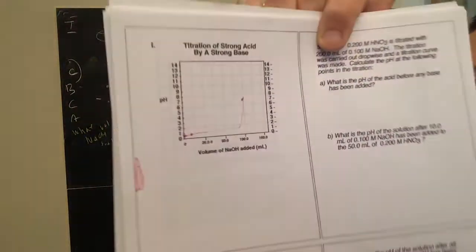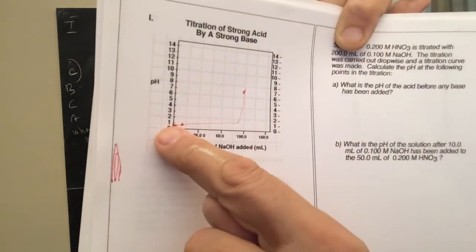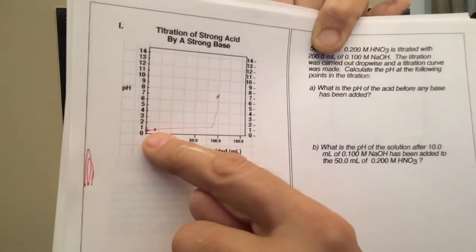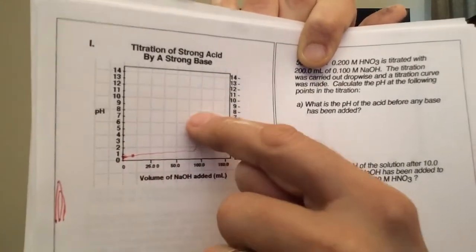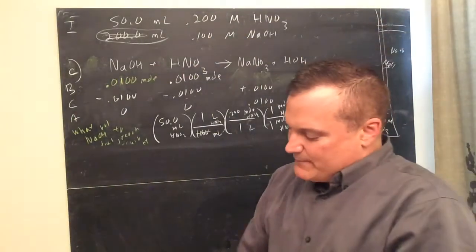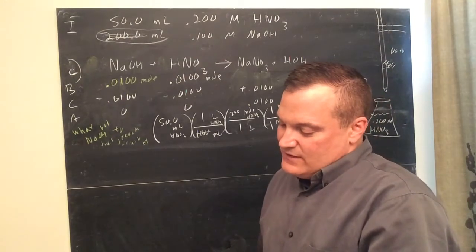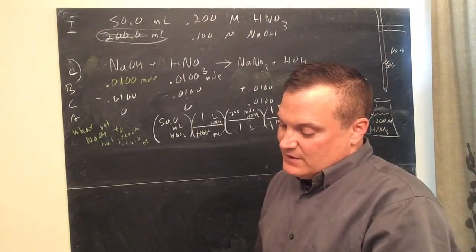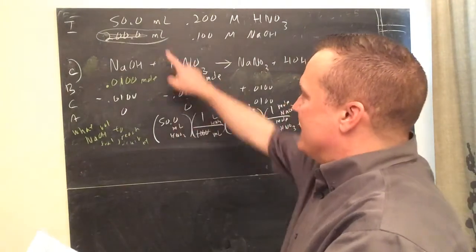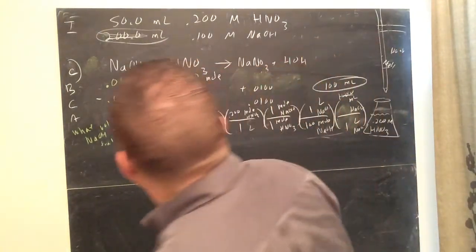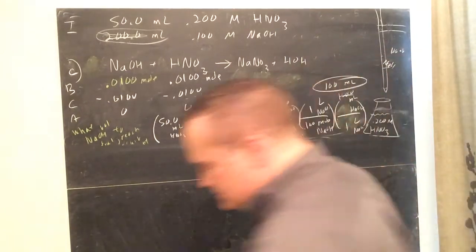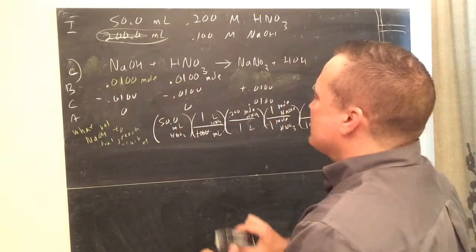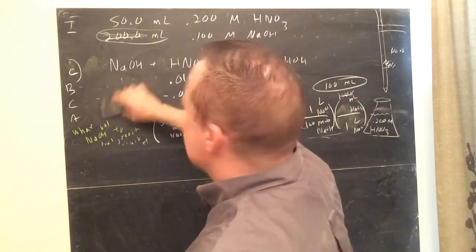So we did — when I last saw you, I had done this curve. I showed you the initial point, then I showed you when 10 milliliters were added, and then equivalence point at 7, looked like that. And then it says: what will be the pH after all 200 milliliters have been added?